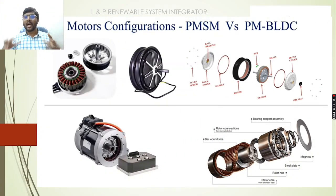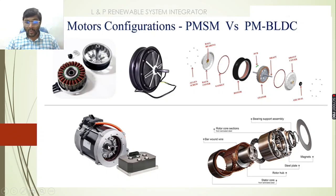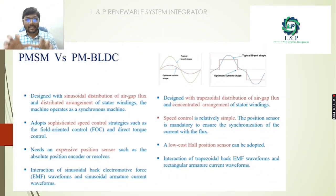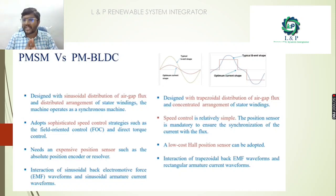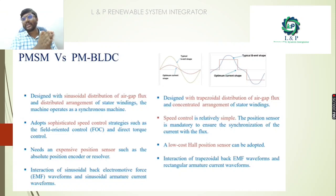Looking at how a permanent magnet synchronous motor and a permanent magnet brushless DC motor look: these are the motors we use in regular electrical vehicles nowadays — one for heavy duty and one for two-wheeler applications. The permanent magnet synchronous motor is designed with a sinusoidal winding distribution, whereas the permanent magnet brushless DC motor is designed with a trapezoidal distribution. Accordingly, the control method for the PMSM is sinusoidal, and for the trapezoidal type it is trapezoidal.